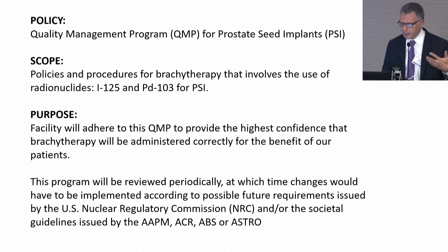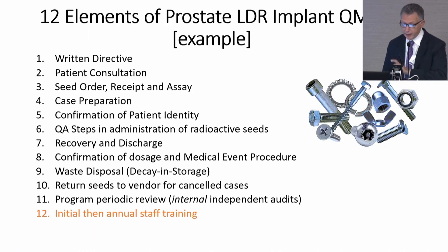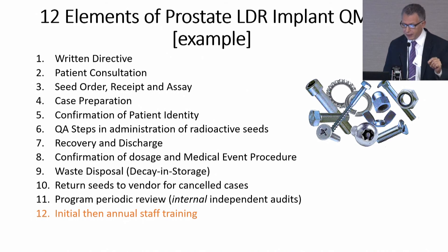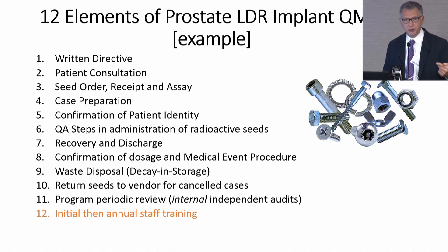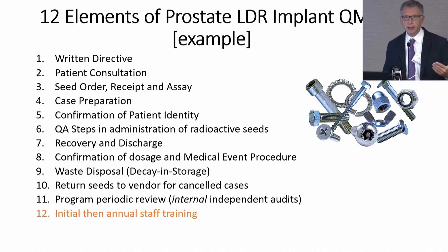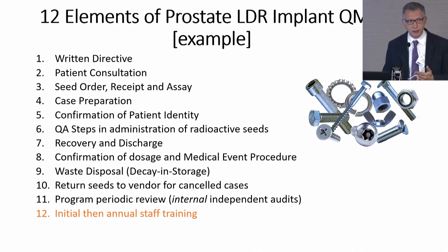These are the key aspects you want to state in your QMP: your policy, scope, and purpose. I've developed 12 elements — they may not be exactly yours, but most will apply, and feel free to add to them. One example is waste disposal. We used to ship leftover seeds back to the vendor after procedures, but realized this was nonproductive physicist time — especially for an off-site location. We switched to decay-and-store. Be creative and make sure your processes are productive.